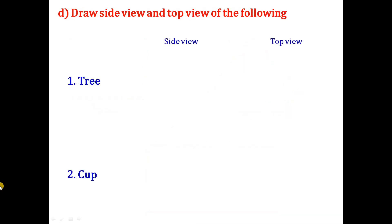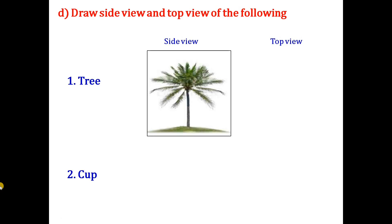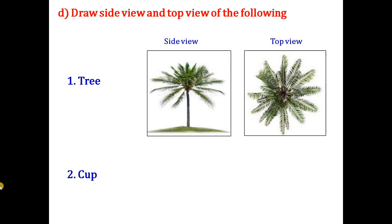Next question: draw the side view and top view of the following. We already learned how to draw side view and top view of anything in my previous videos. This is a side view of a tree and this is a top view of a tree. In the top view, we see only the upper part of the object.